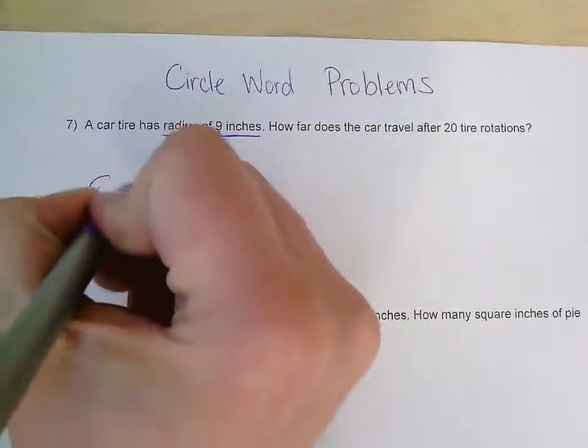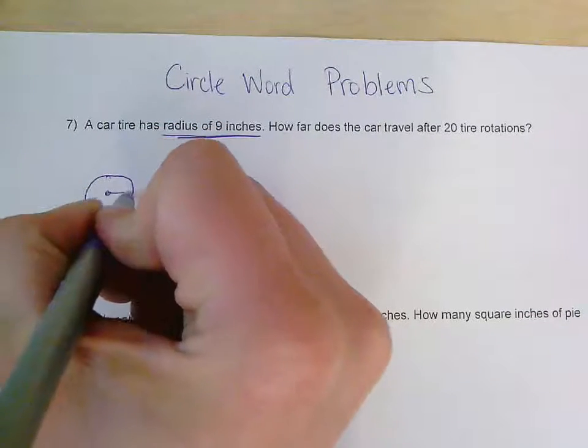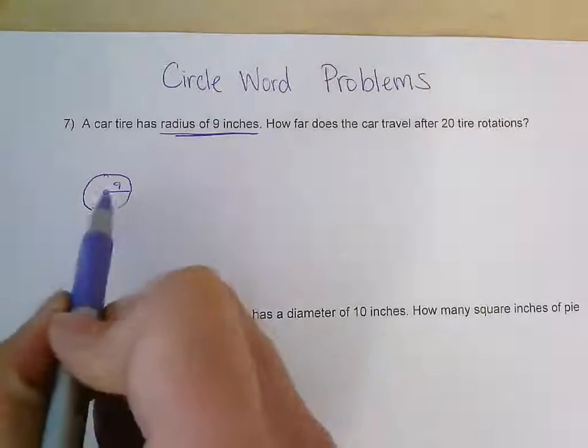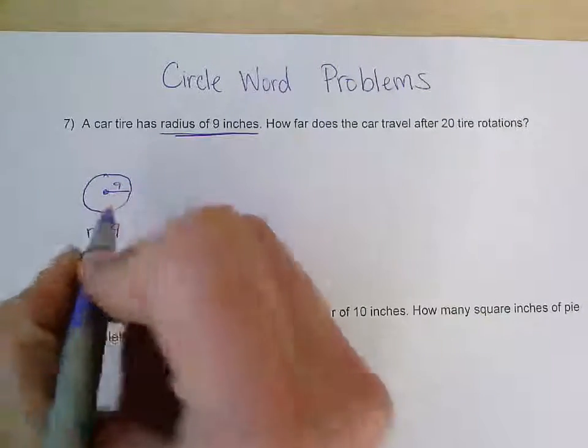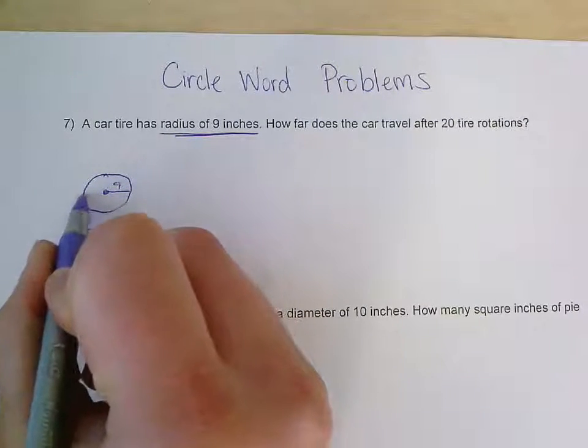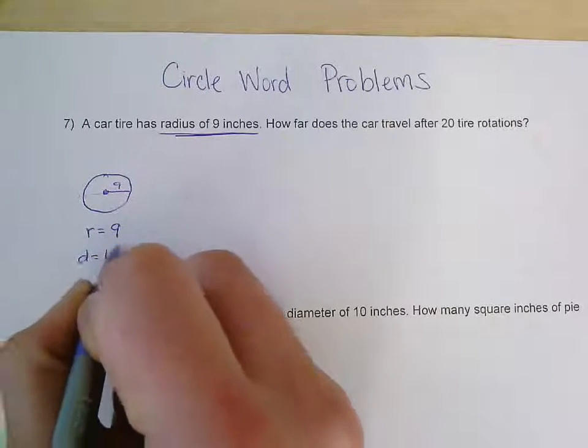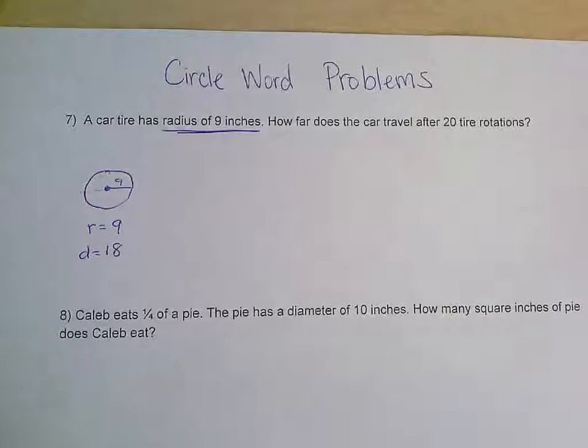So the first thing I'm going to do is just draw out my tire here. It has a radius of nine. Radius is the distance from the center to the edge. So I know that the distance is nine. Underneath I'm just going to write radius equals nine. I also know then that a diameter is all the way through. So that means that the diameter is going to equal 18.